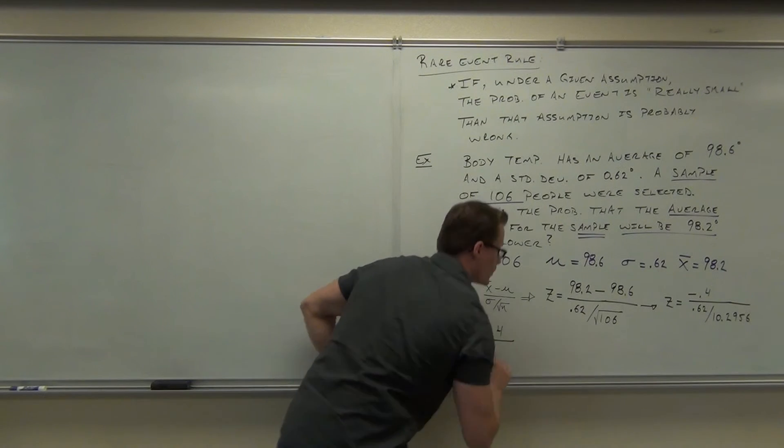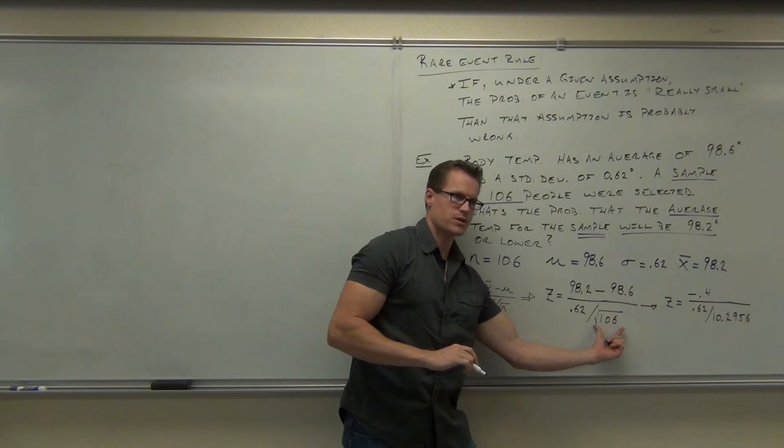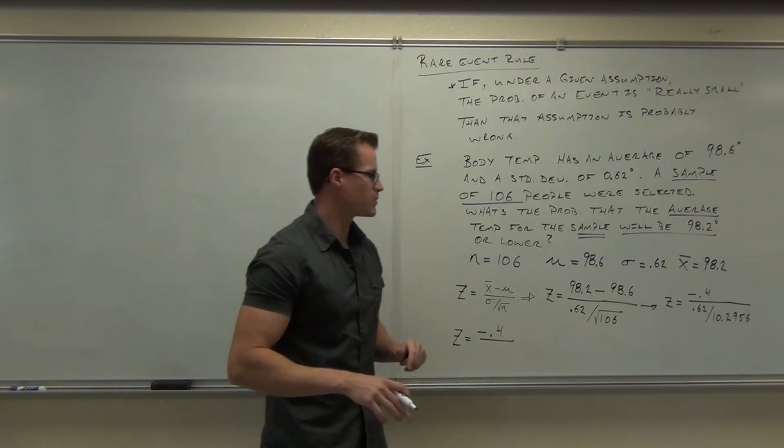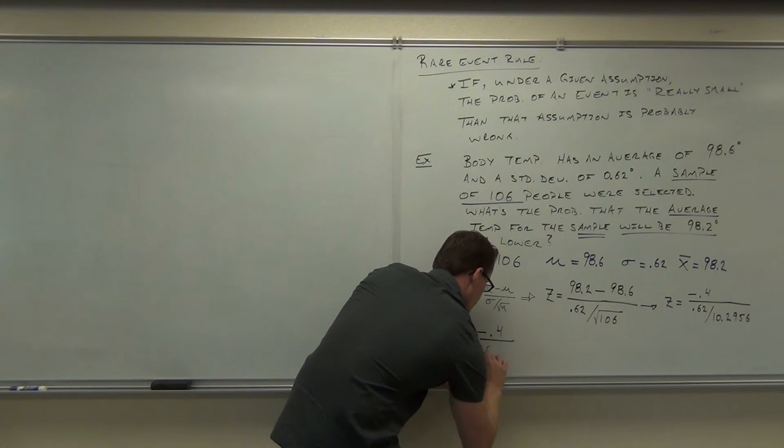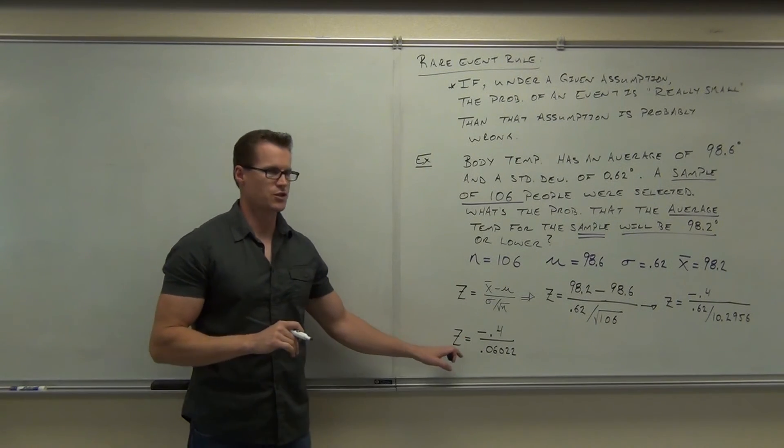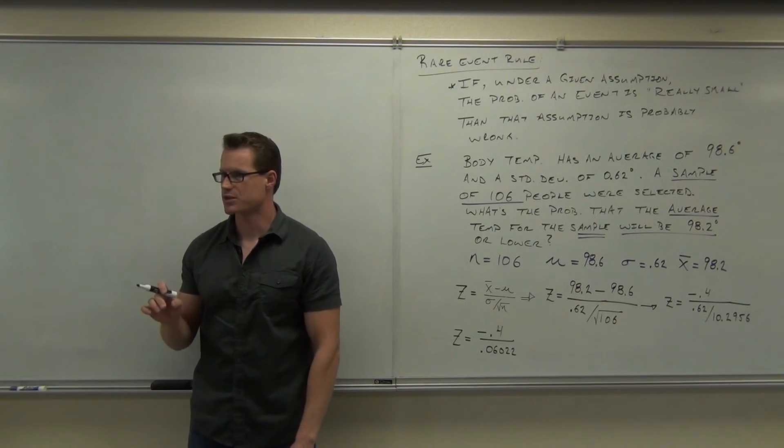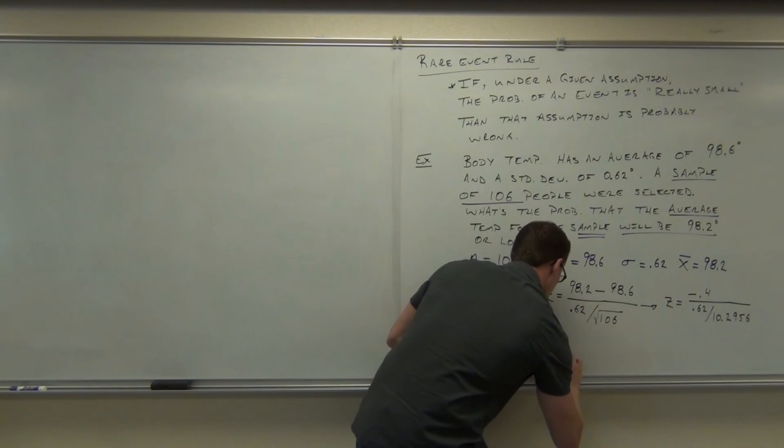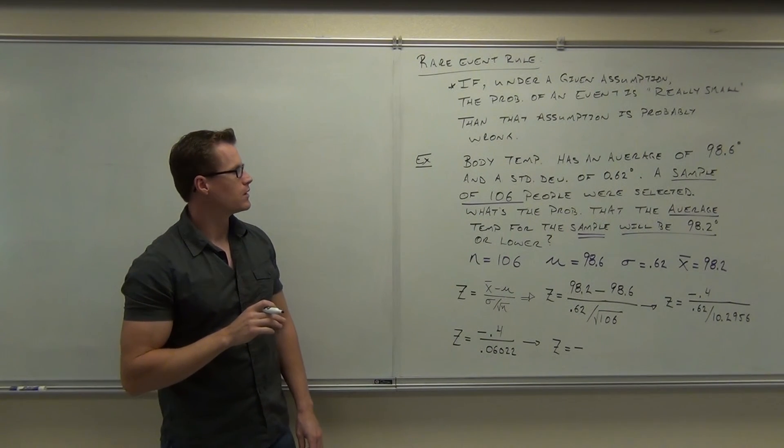So negative 0.4, I'm going to leave that for a second while I calculate this. Notice, I did the top portion of my numerator, and I'm now working on my denominator. I have to do the square root first. Find out what the number is. Then do our division here, find out what that number is, and then we'll be able to do our final division. What is 0.62 divided by 10.2956? 0.06022. Perfect. And now we'll do this division. We'll do negative 0.4 divided by 0.06022. You're dealing with very small numbers, aren't you? If you rounded here inappropriately, this is going to be way off. Well, our z-score is certainly negative.